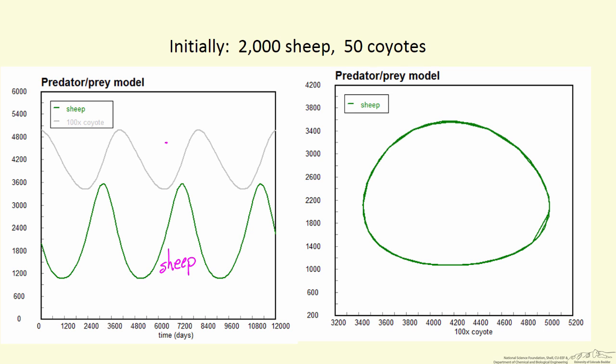and this is coyote. Notice I've multiplied the coyote by 100 so I can show them on the same plot.